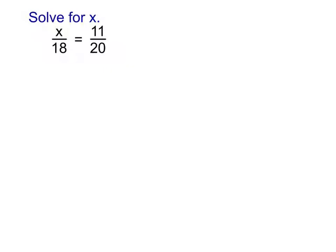When we have this, this is the one where we cross multiply. When we cross multiply, what we're doing here is we're actually doing 20 times x, which is why we get 20x, and then it's equal to. This is the part where most people stumble on the cross multiplying — they forget that it's equal to. It's equal to 18 times 11, which is 198.